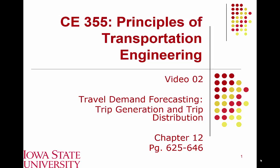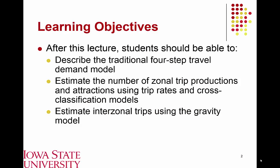Today our lecture talks about travel demand forecasting, and specifically we're talking about two steps in what's referred to as the traditional four-step travel demand model — trip generation and trip distribution. At the conclusion of today's lecture, students should be able to describe each of the steps in the four-step model, estimate trips produced and attracted using trip rates and cross-classification models, and estimate trips within and across zones using the gravity model.